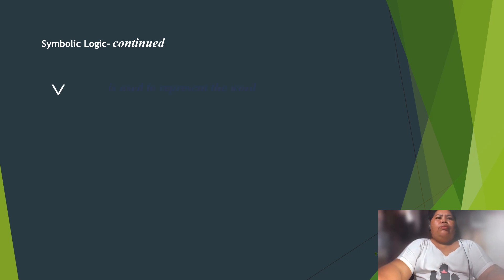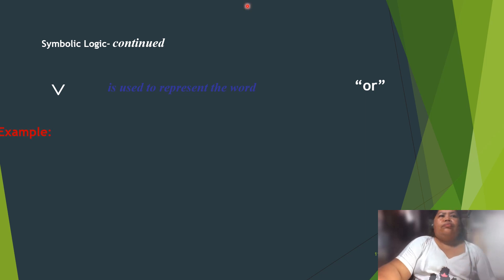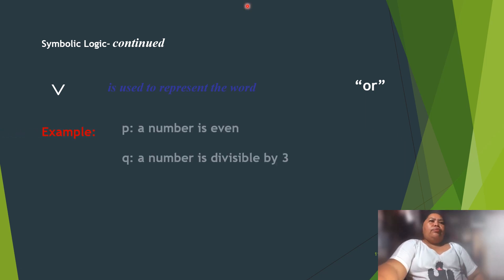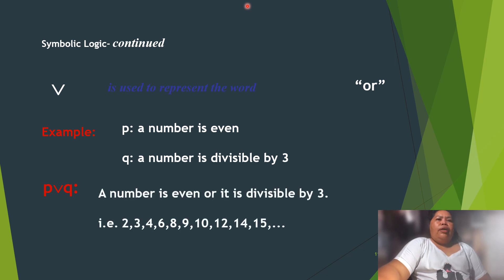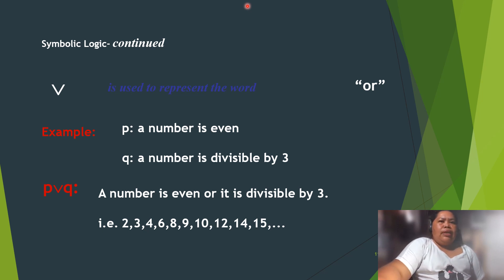The symbol '∨' is used to represent the word 'or.' Example: P (hypothesis) is 'a number is even,' Q (conclusion) is 'a number is divisible by three.' So P or Q means a number is even or divisible by three — like 2, 3, 4, 6, 8, 9, 10, 12, 14, 15, and so on.